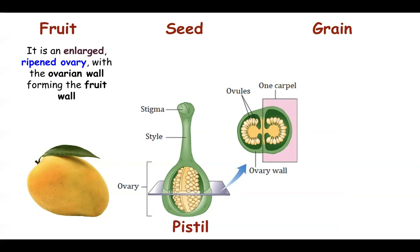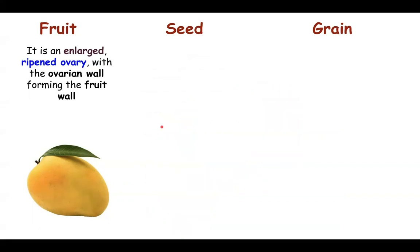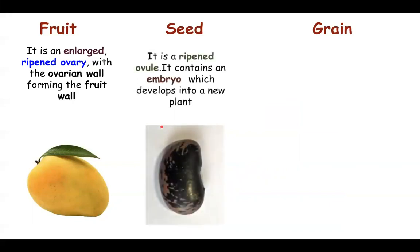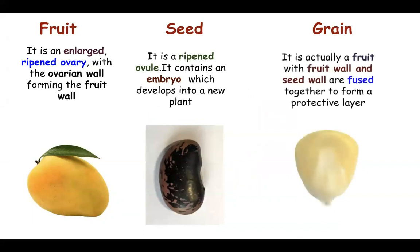The fruit is basically nothing but an enlarged ripened ovary, and the ovarian wall forms the fruit wall, as in the case of mango. The seed is the ripened ovule — the structure which contains the embryo, which develops into a new plant. In some cases, the fruit wall and the seed wall are fused to form one single protective structure called a grain, as in the case of maize.